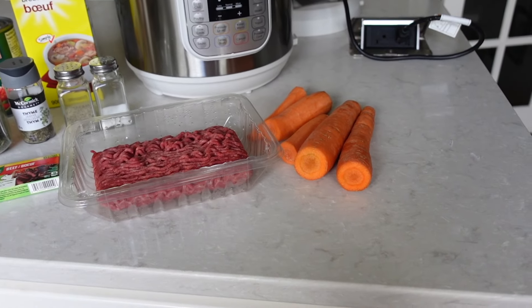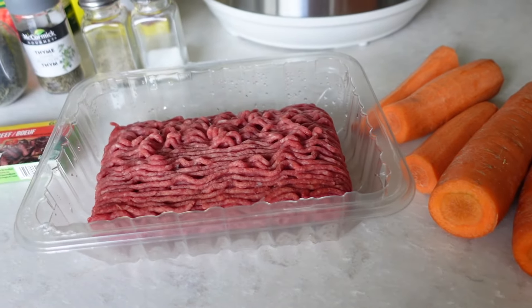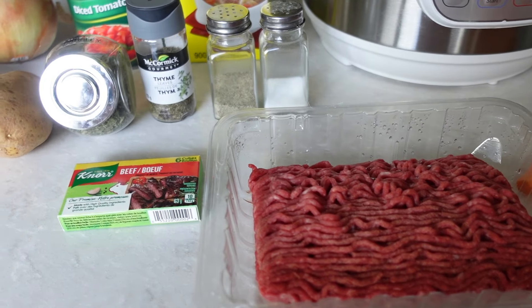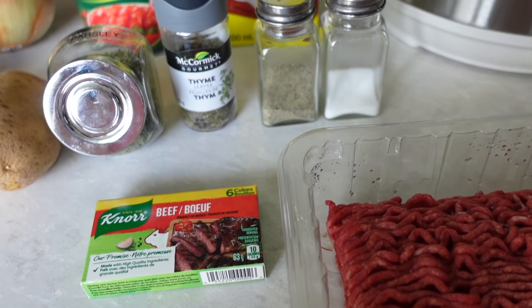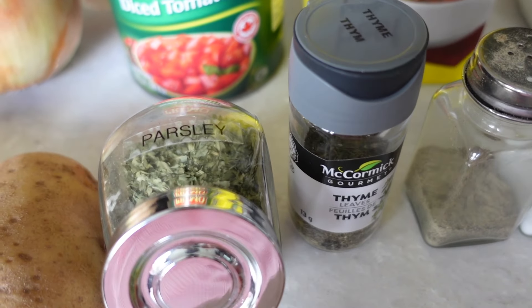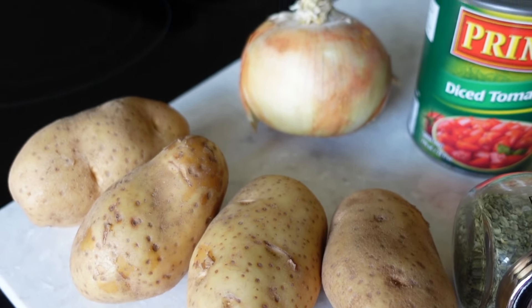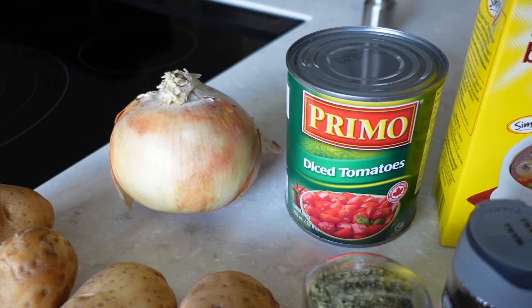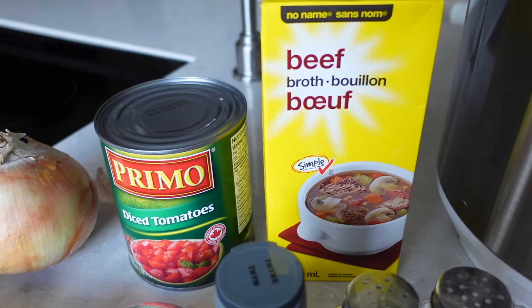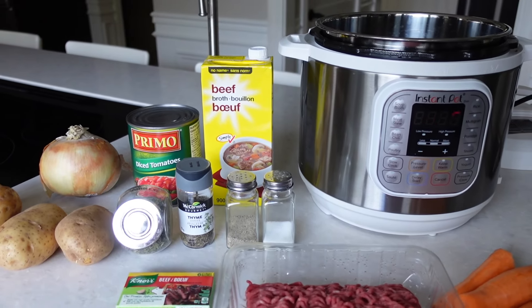What I love about this recipe is that most of these things you're going to have on hand so it's very easy to make. You're going to need some ground beef, potatoes, carrots, onion, beef bouillon, salt and pepper, thyme and parsley, diced tomatoes and beef broth. So that's pretty much it. Like I said it's very simple, very easy to make and it's great for this time of year.